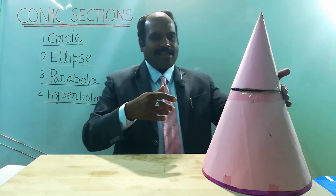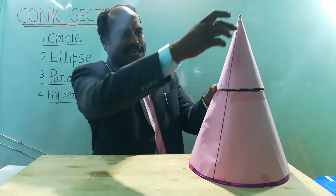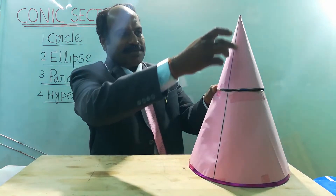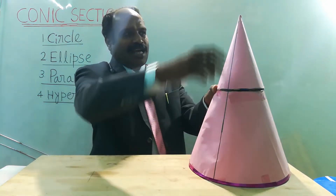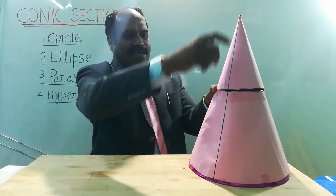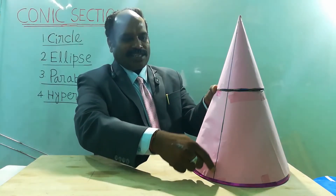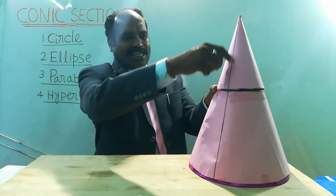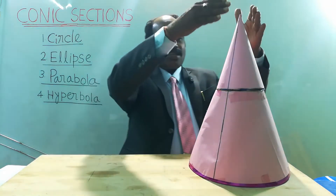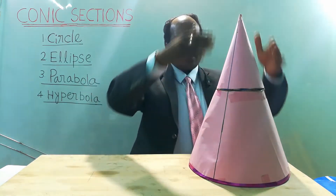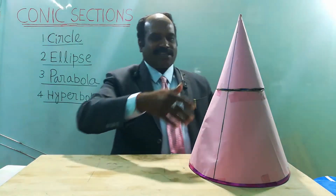In particular, this is one of the generators shown in the object — a line joining the apex and the base circumference at a point. This connecting line is called a generator. Likewise, numerous generators will be there along the outer surface of the cone.